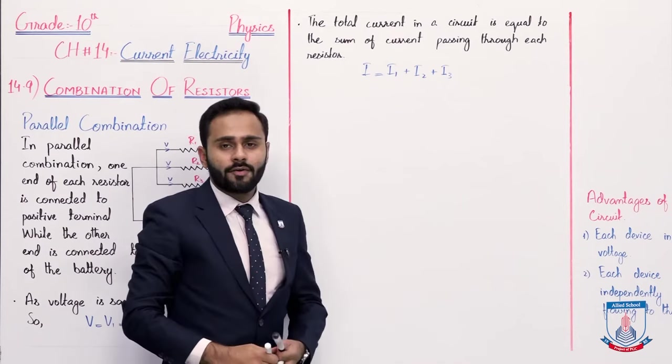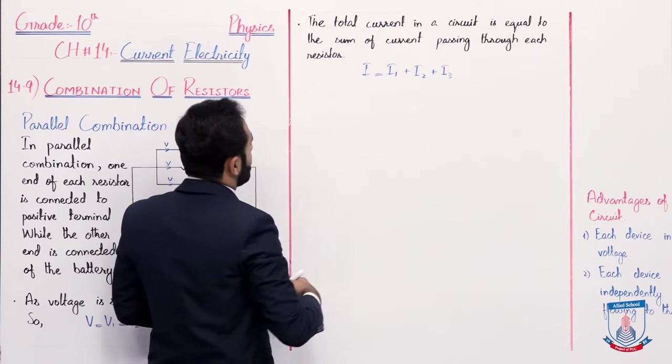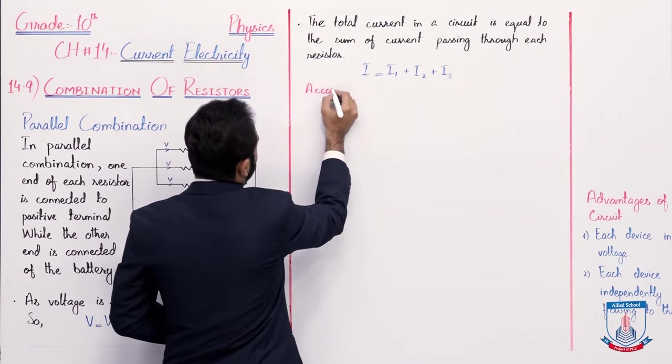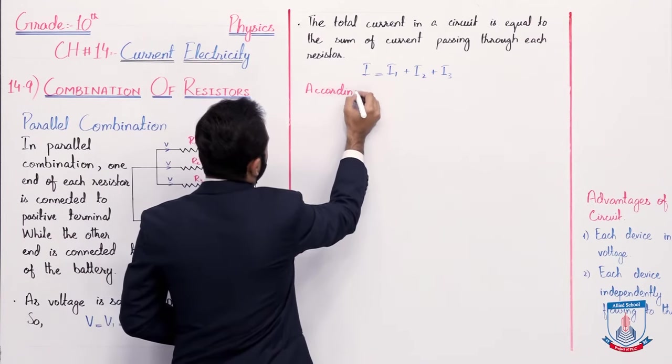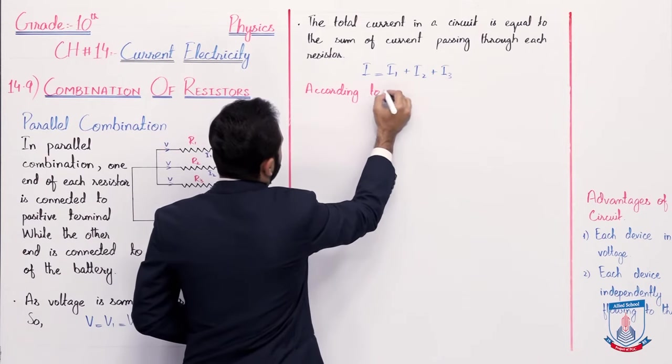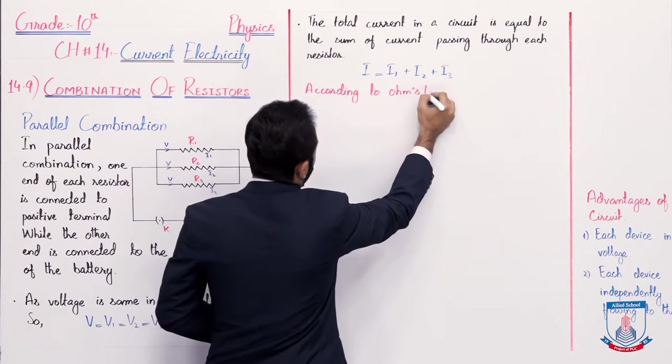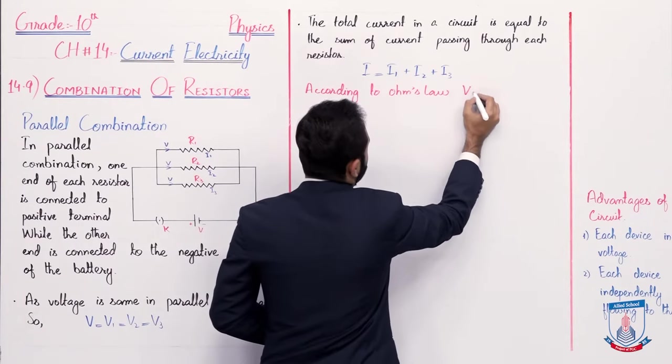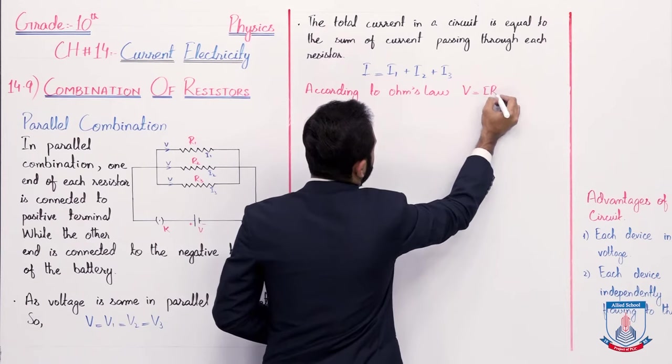Now, according to Ohm's law, you know that V is equal to IR. So, according to Ohm's law, V is equal to IR.